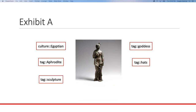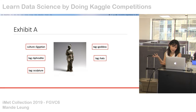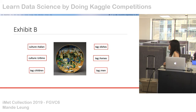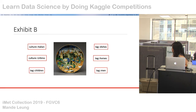Back to our sculpture example — it turns out this sculpture is Egyptian, it depicts a goddess, and it is for a deity. There is also a label for 'hat' attached to this picture, so there's probably something interesting about the hat from an art history perspective. For another example, this plate has labels like dishes, horses, children, and men, and also two culture labels: Italian and Urbino.